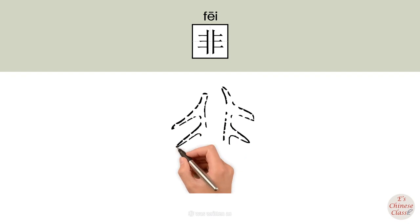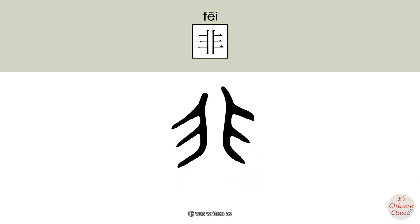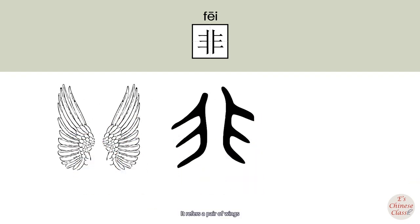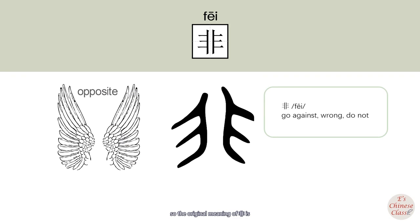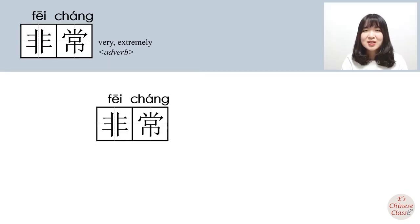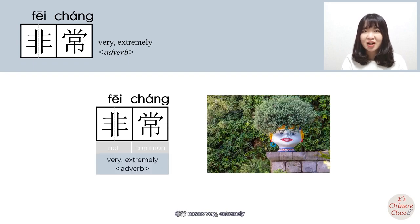In Asian languages, 非 was originally written to represent a pair of wings opposite to each other. So the original meaning of 非 is 'go against.' The extended meanings are 'wrong' and 'do not.' So 非 means 'not,' and 常 means 'common,' making 非常 mean 'very' or 'extremely.'